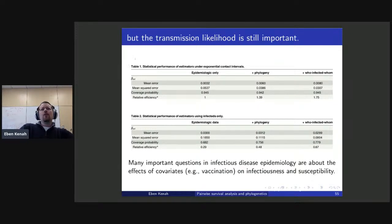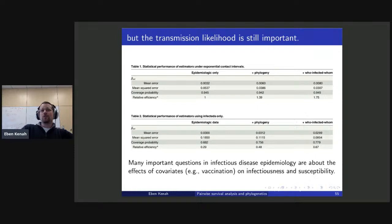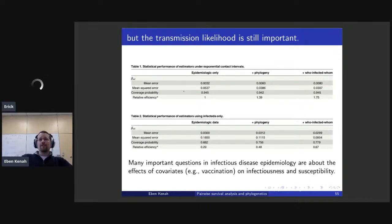We can see that the phylogenetics are about halfway or more than halfway from knowing nothing about who infected whom to knowing everything about who infected whom. With exponential contact intervals: relative efficiency is 1.0 for epidemiologic data only, 1.39 if we add the phylogeny, and 1.75 if we know exactly who infected whom. If we remove data on people who were at risk of infection but not infected, the picture deteriorates dramatically — we get relative efficiencies of 0.29, 0.48, and 0.67.